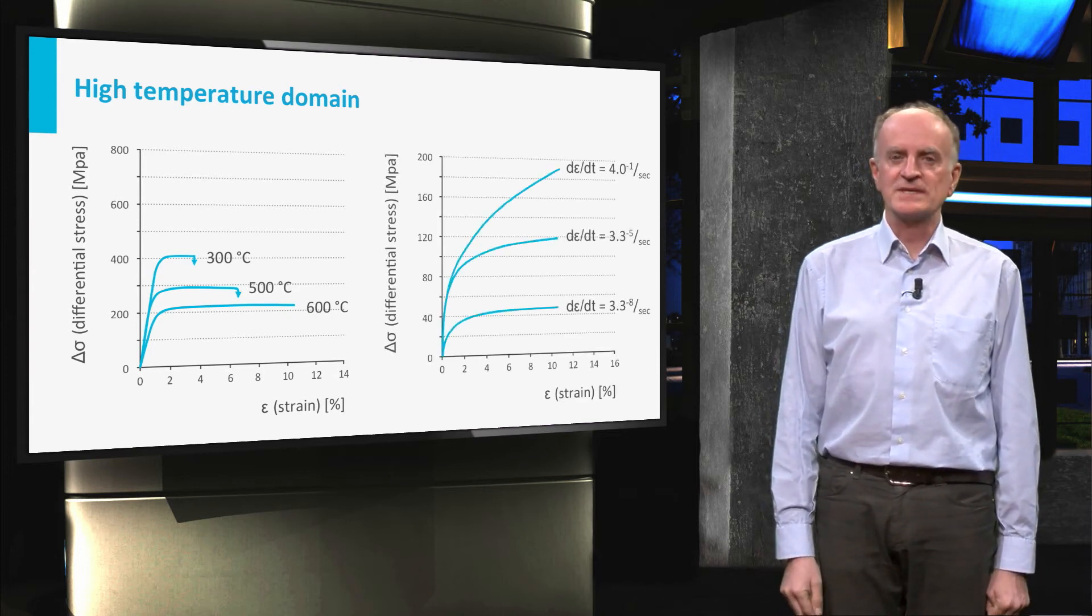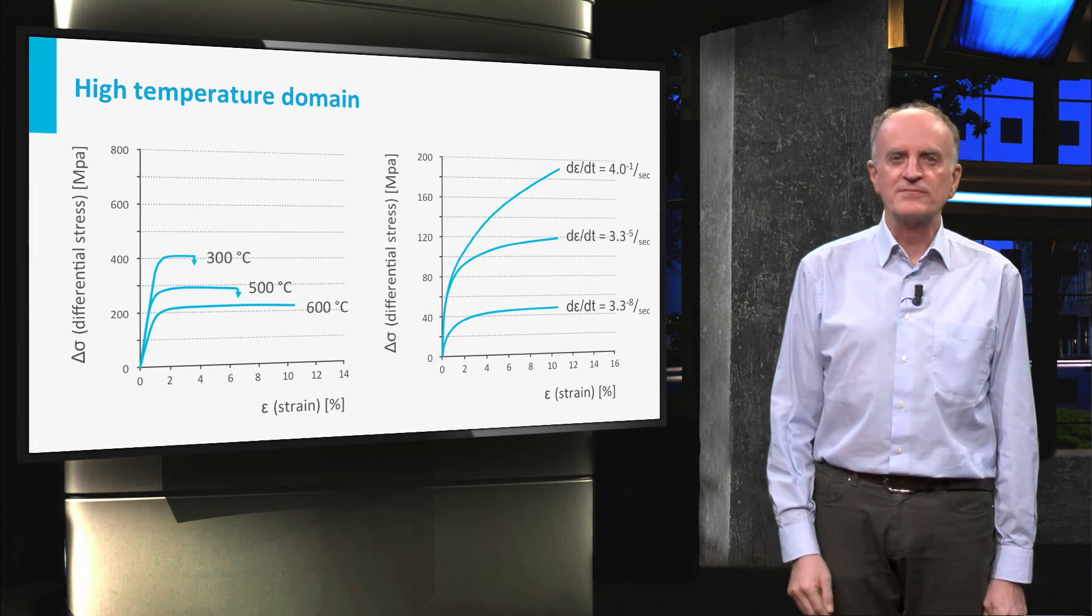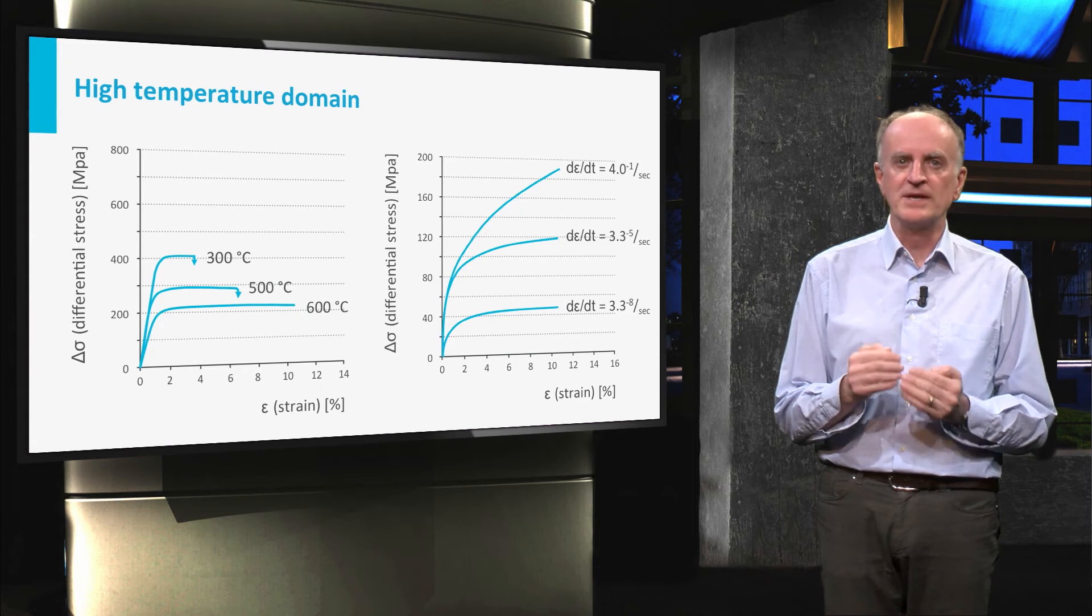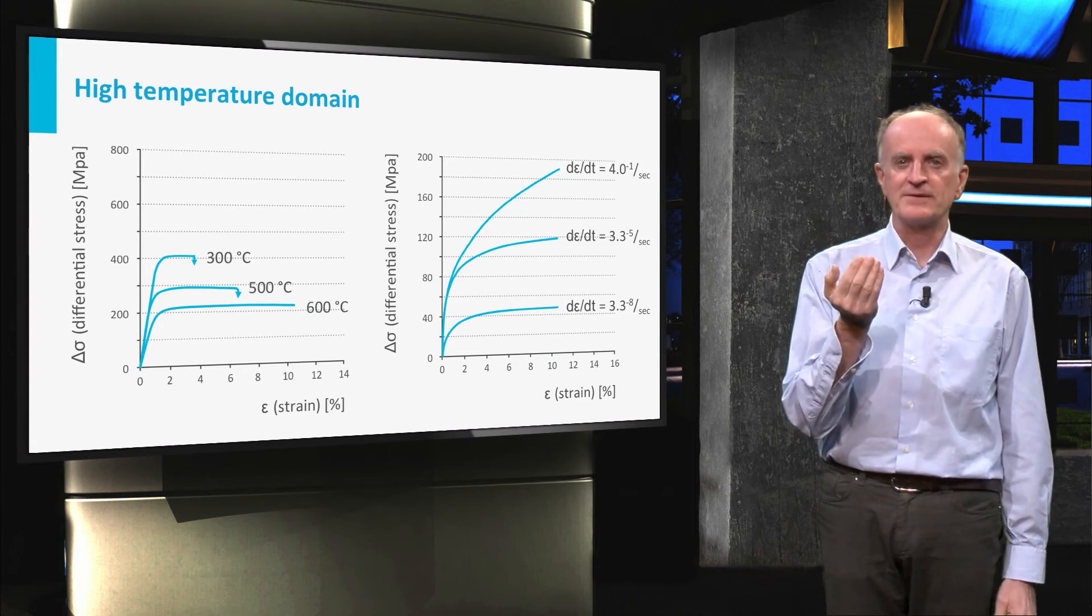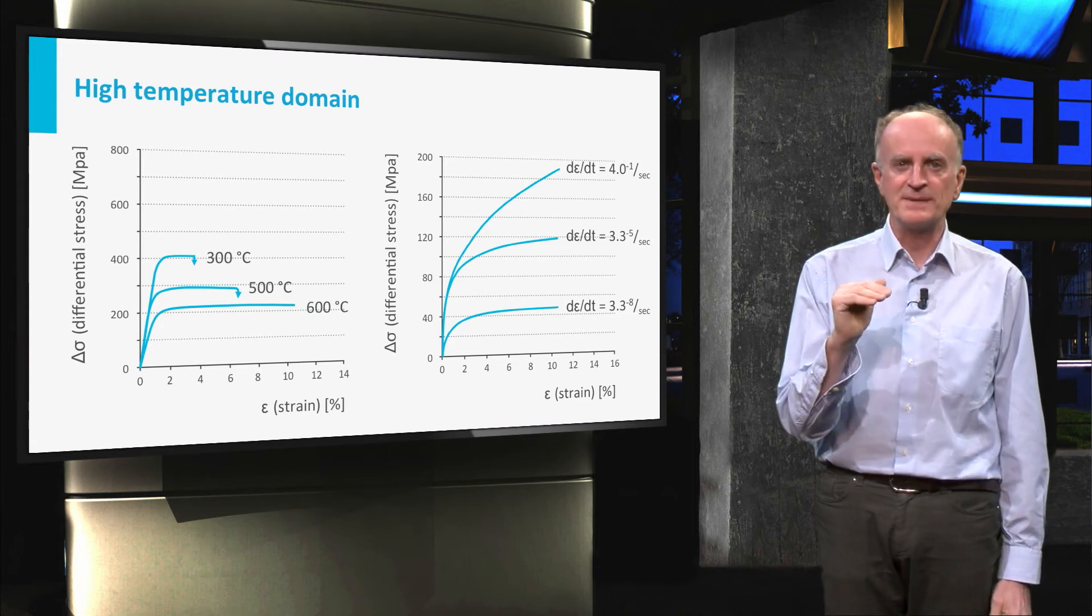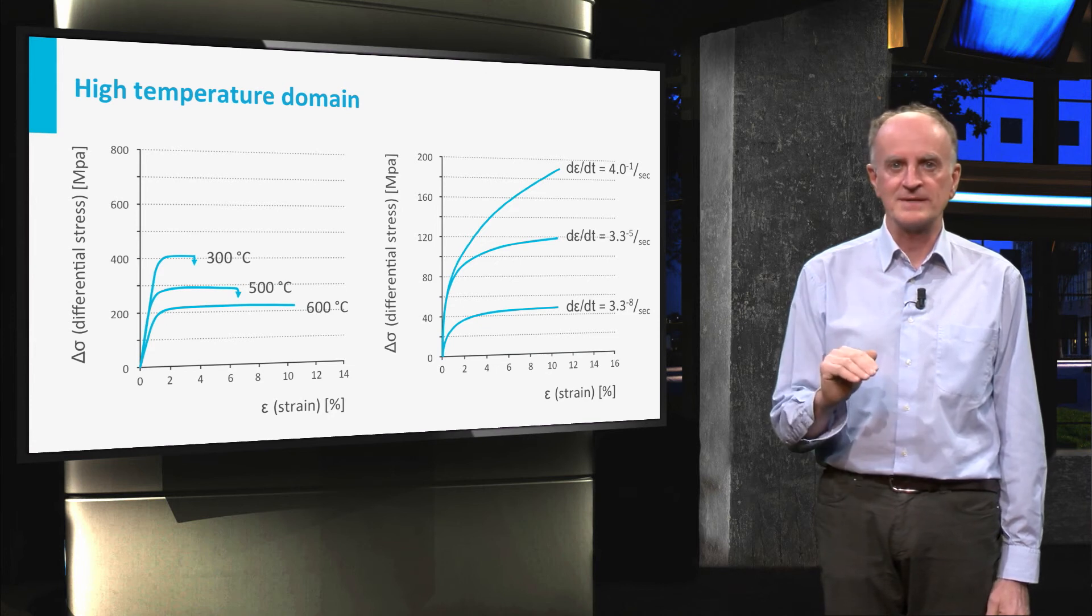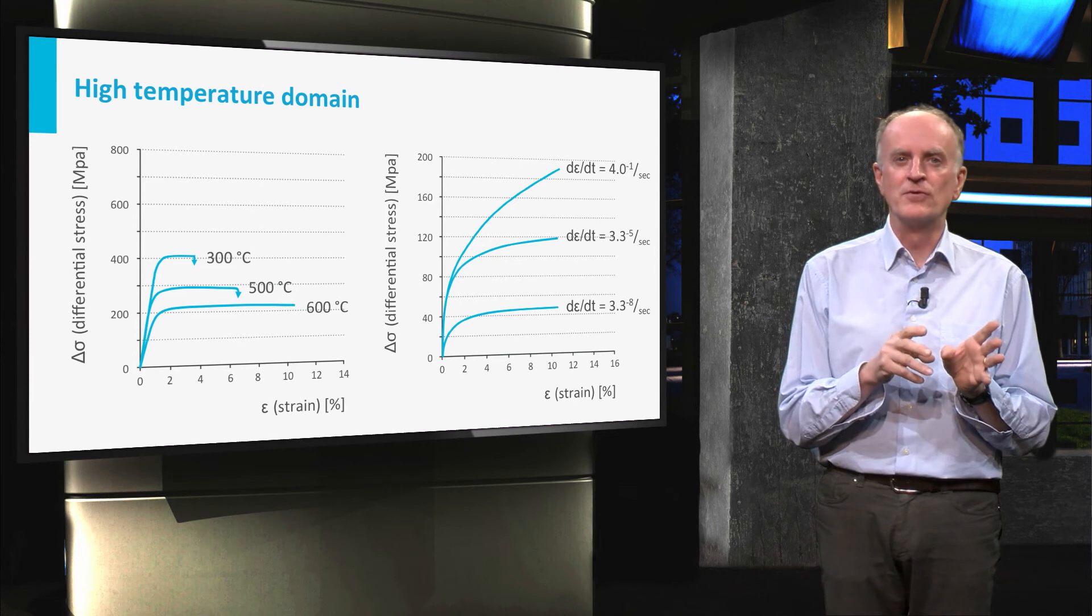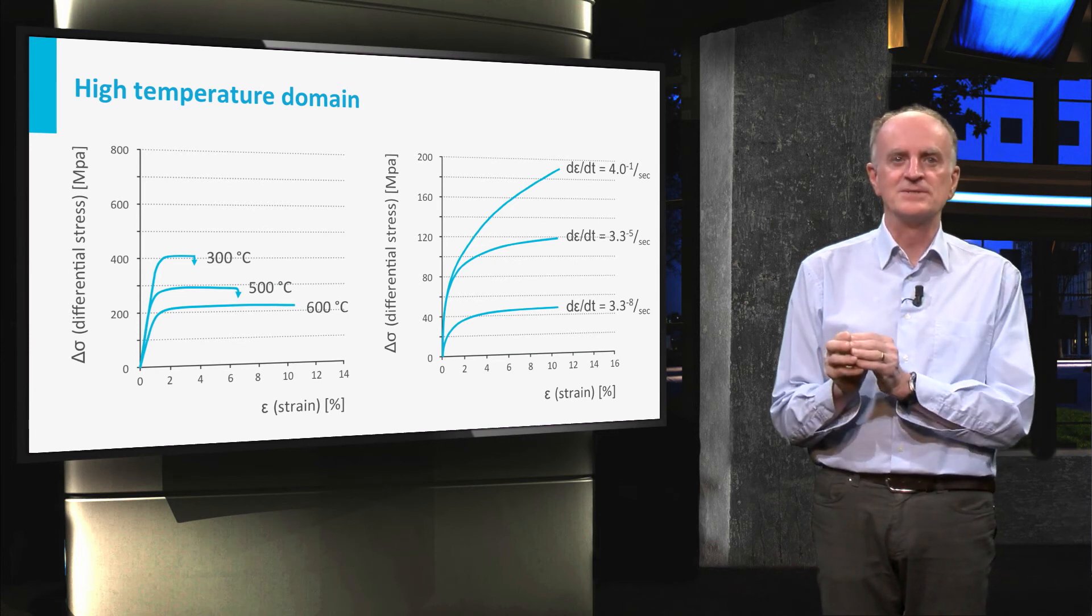The second plot shows deformation curves with different strain rates. Note that because of the negative exponent, curves in the upper part of the diagram correspond to faster experiments than those in the lower part. The message is clear. The faster you want to deform, the higher the stresses you need to apply.